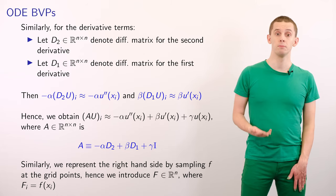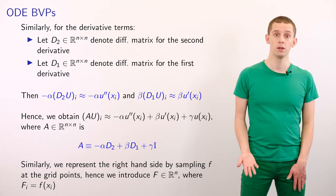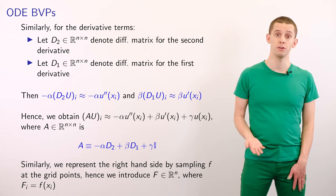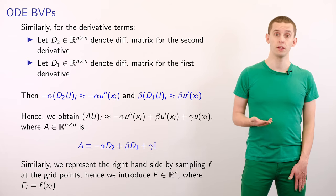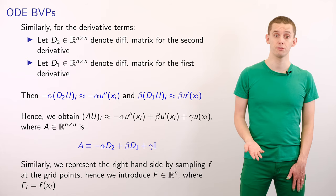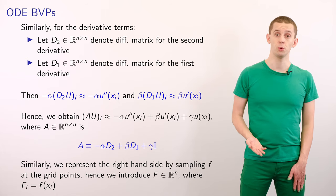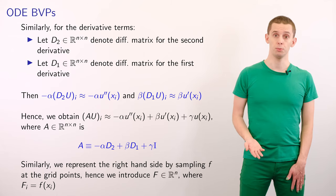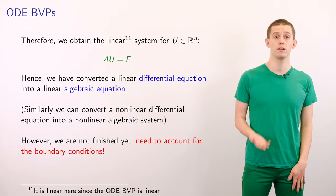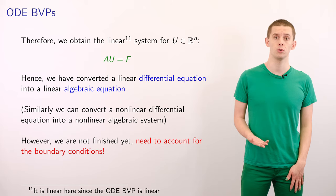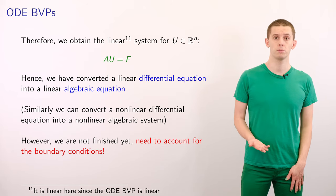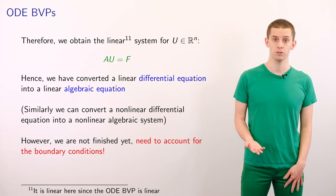We construct a matrix A such that A*U approximates the left-hand side of our differential equation at the grid points x_i. Specifically, A equals minus alpha*D2 plus beta*D1 plus gamma times the identity. We represent the right-hand side by sampling f at the grid points, giving an n-dimensional vector F where the i-th component is f(x_i). Therefore we obtain the linear system A*U equal F — we've converted our linear differential equation into a linear algebraic system. The same approach applied to a nonlinear ODE would result in a nonlinear algebraic system.